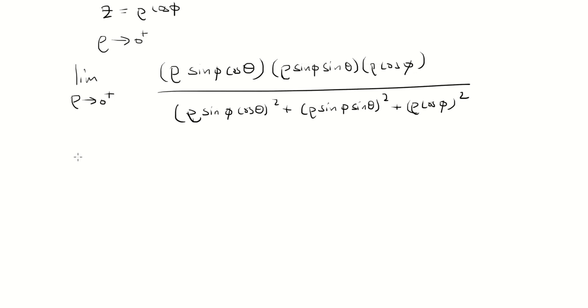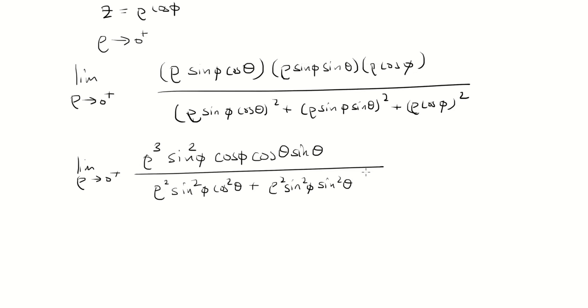On the top, we have three rhos. When you multiply that, you get rho cubed, and then we have two sine phi's, that's sine squared phi, and then cosine phi followed by cosine theta sine theta. In the denominator, we're going to square everything: rho squared sine squared phi cosine squared theta, rho squared sine squared phi sine squared theta, and then rho squared cosine squared phi.